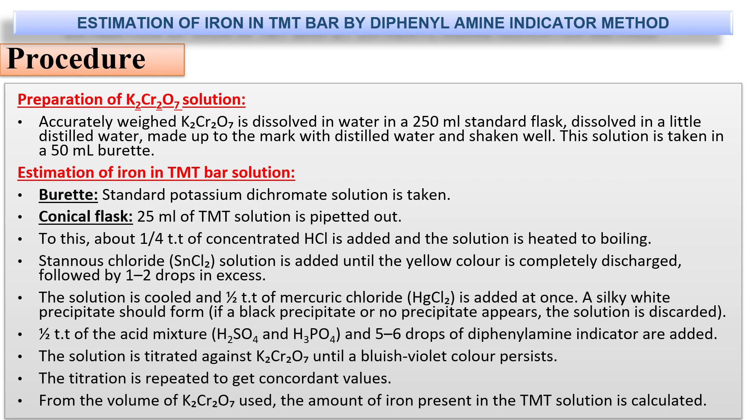For the conical flask, pipette out 25 ml of TMT solution and add one test tube of concentrated HCl to it and boil. To the hot solution, add drops of stannous chloride until the yellow color is completely discharged, followed by one or two drops excess of stannous chloride. The solution is cooled and half a test tube of mercuric chloride is added. A silky white precipitate should form. If you see a black or no precipitate, the solution must be discarded.